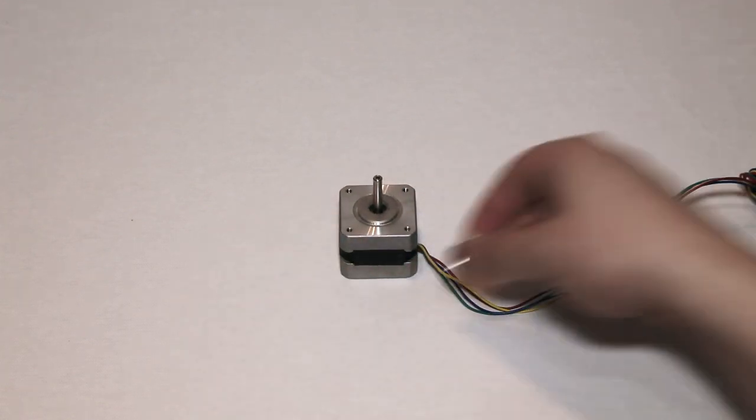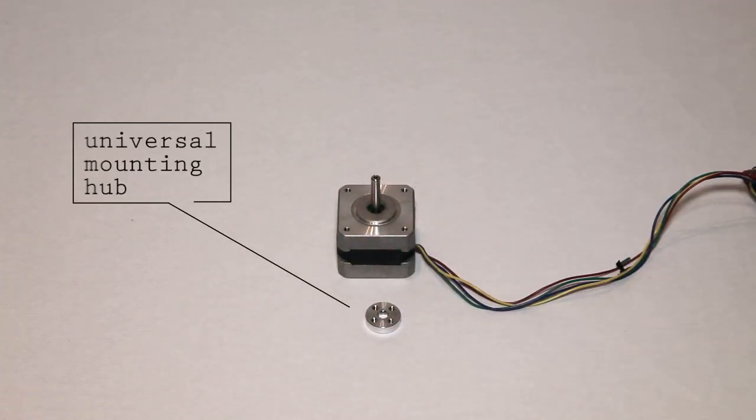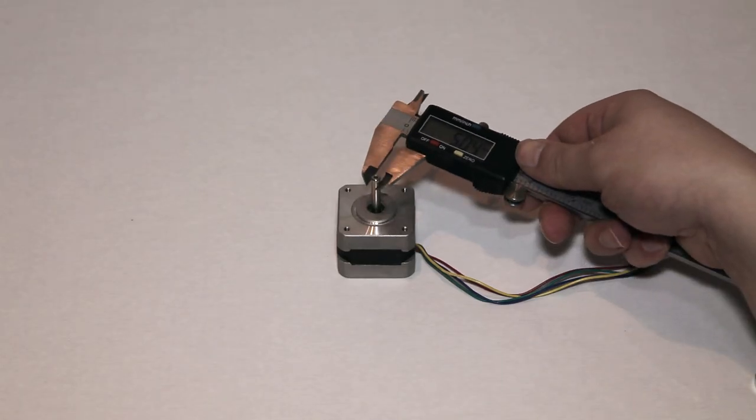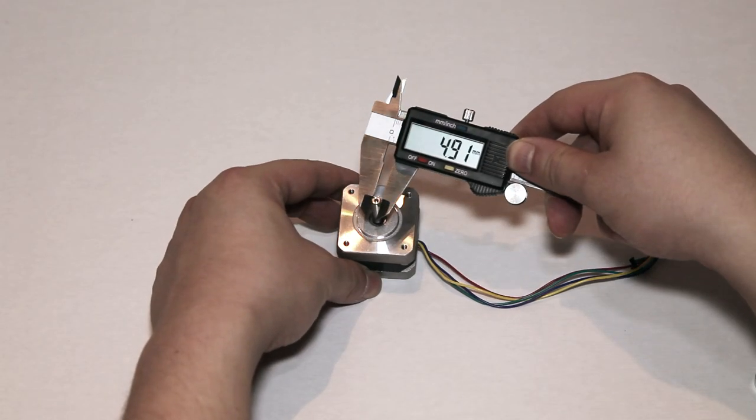We'll use a ready-made part called a universal mounting hub. These will cost you around 10 bucks. To buy one, you should know the diameter of your stepper motor shaft. Ours is 5 millimeters.